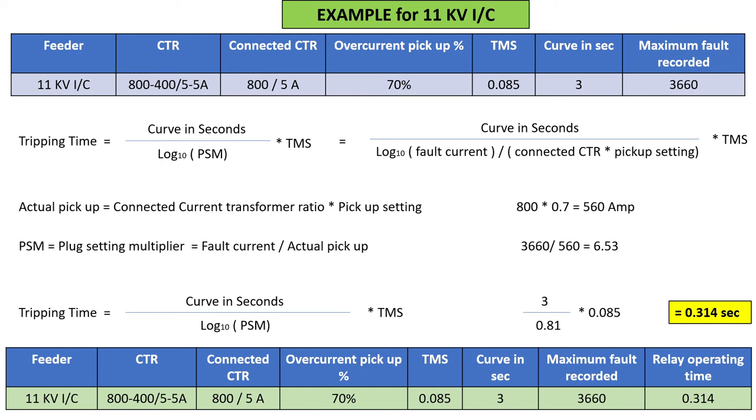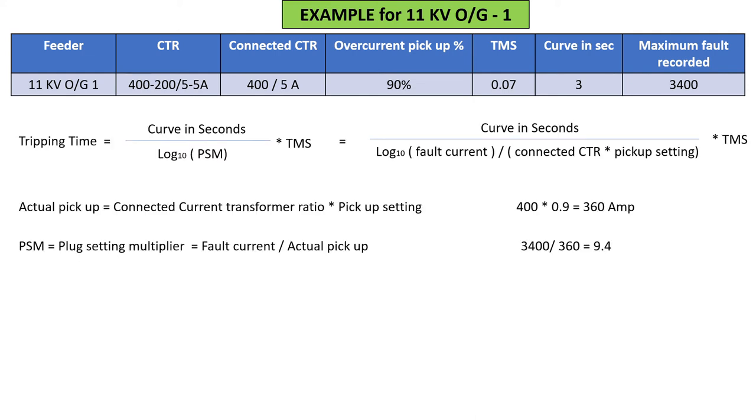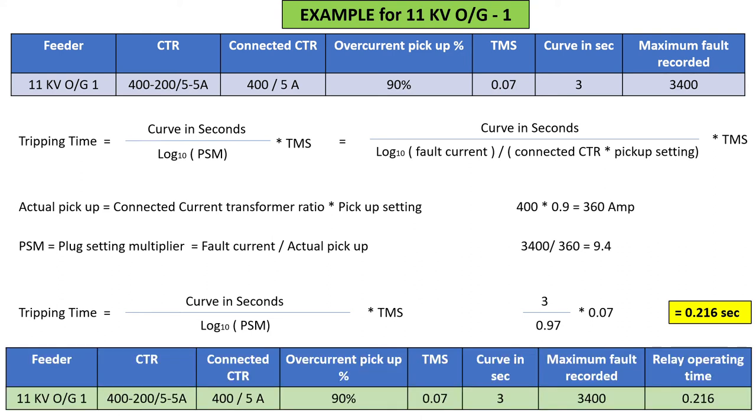Similarly, for 11 kV outgoing feeder one: CTR, pickup, TMS - fault current is different at 3400 A, rest of the process is the same. We found the pickup is 360 ampere and plug setting multiplier is 9.4, so tripping time comes out to be 0.216 seconds, about 216 milliseconds.